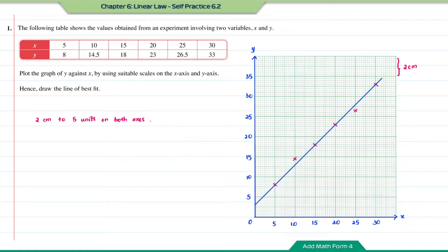This will be the graph for question number 1. We have 2 points that are not on the straight line, but these 2 points are equally distributed — one is above the straight line and one is below the straight line.